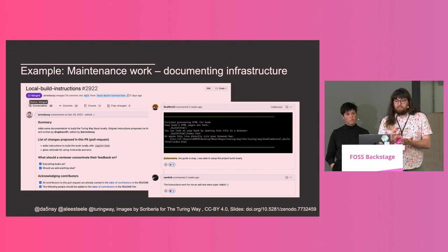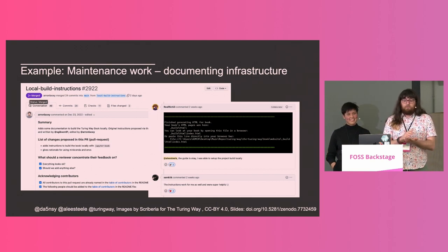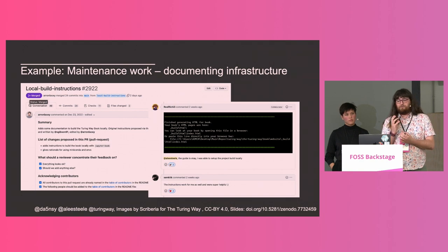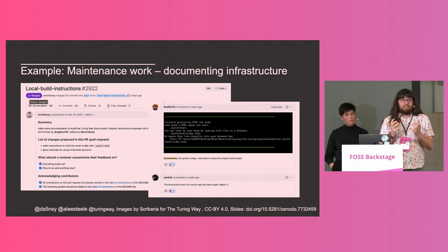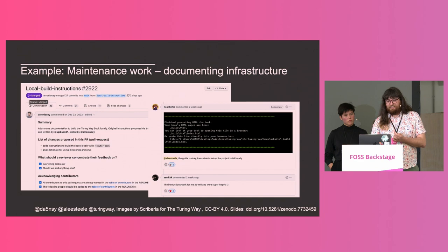Another thing we've been working on recently is reducing the bus factor — a term I didn't know before this conference, thank you folks — by writing about what we do. The book currently has lovely things like introductions to Git and how to organize an accessible conference, but we could do with more of: how do we do what we do? How do we build the book itself? What steps do you need to follow to reproduce our work? That is a work in progress currently, but going really well.